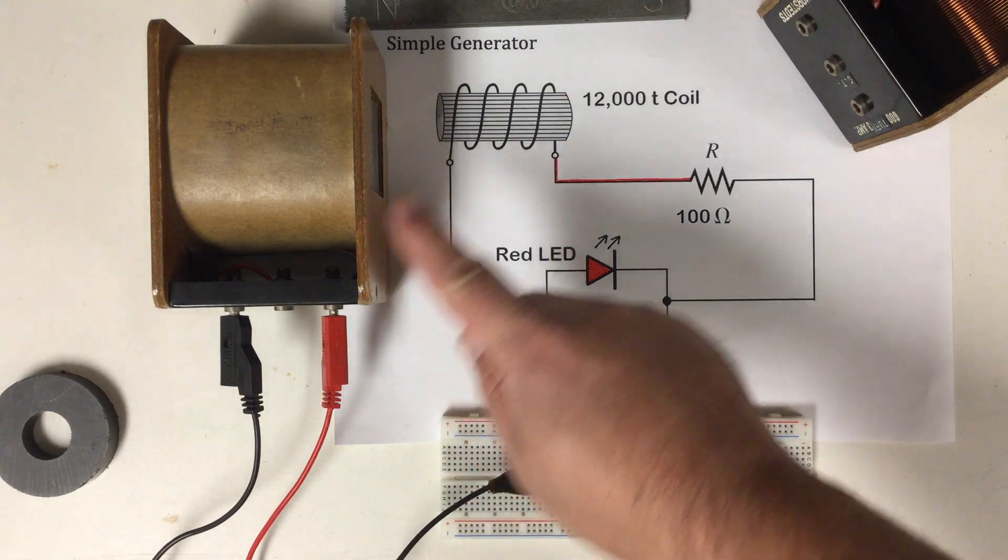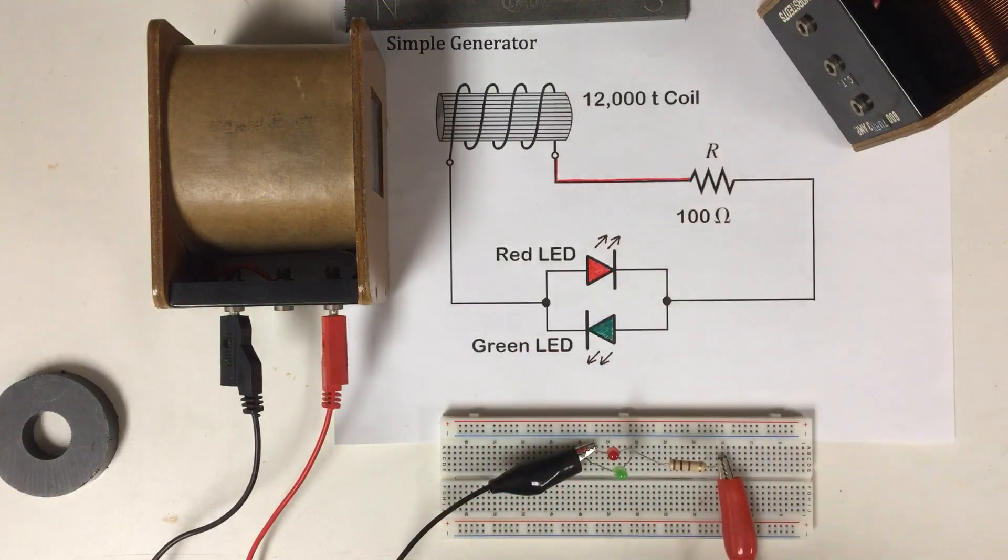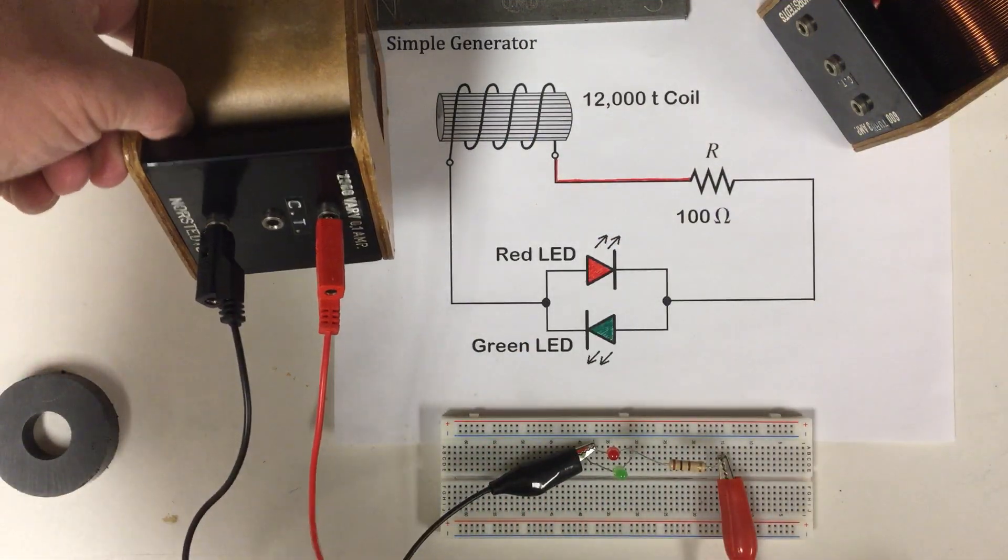What I have is a coil of wire and this coil of wire just happens to be 12,000 turns.